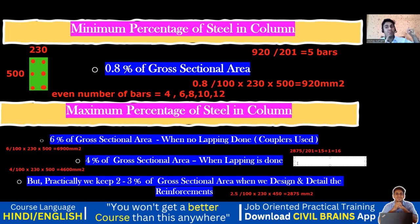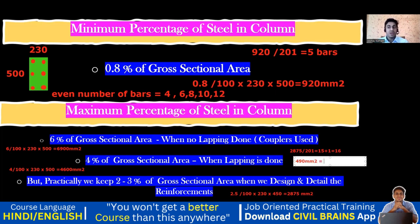It's important to remember areas of common bar diameters: 8 mm = 50, 10 mm = 78, 12 mm = 113, 16 mm = 201, 20 mm = 314, 25 mm = 490 mm². Now for 25 mm bars: 2875 ÷ 490 = 5.84, which rounds up to 6 bars.